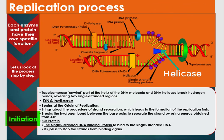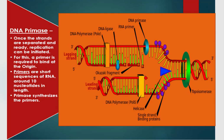DNA helicase breaks hydrogen bonds between the base pairs to separate the strands by using energy obtained from ATP. In turn, single-stranded DNA binding proteins also bind to the single-stranded DNA to stop the strands from binding again. Once the strands are separated and ready, replication can be initiated.